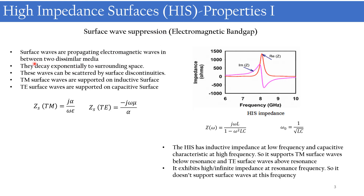Surface waves are propagating electromagnetic waves between two dissimilar media — for example, at a metal-dielectric interface. If this interface has discontinuities like bends, these waves will be scattered. For a surface to support surface waves it must have some impedance. If the surface supports TM surface waves, it should have an inductive impedance given by Z_TM = jα / (ωε).